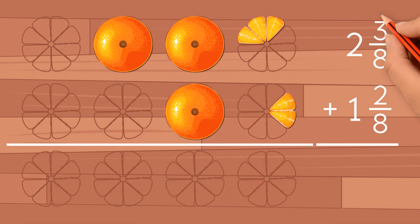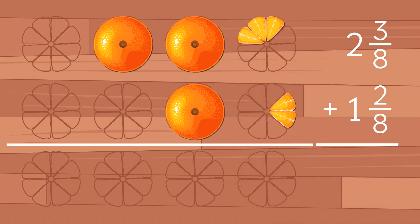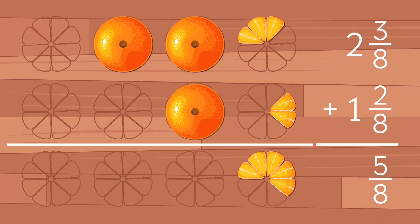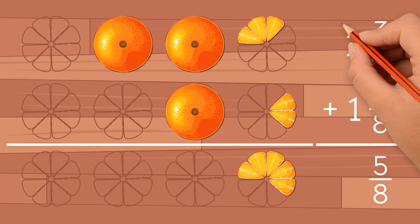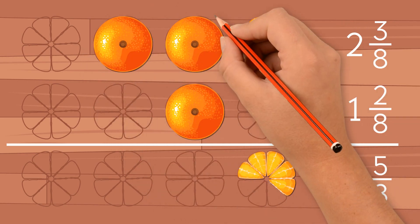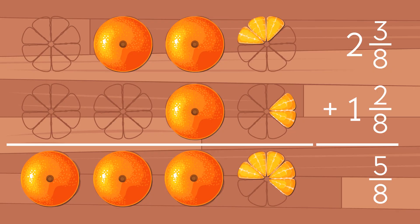First we add the fractional part. 3 eighths plus 2 eighths gives us 5 eighths. Now we add the whole number parts. 2 plus 1 gives us 3. So the answer is 3 and 5 eighths.